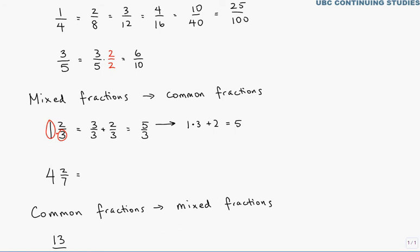Okay, so let's try that again, both ways. If we wanted to create an equivalent fraction for four, that whole number part, it would be 28 over seven. And then we could add that to two over seven to get 30 over seven, the common fraction equivalent of four and two-sevenths.